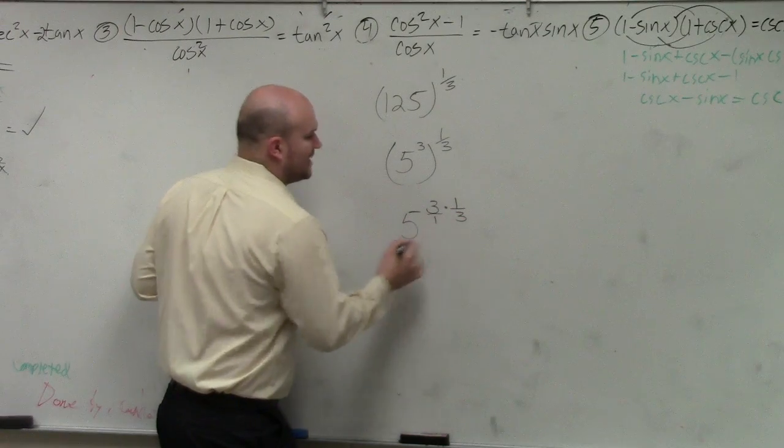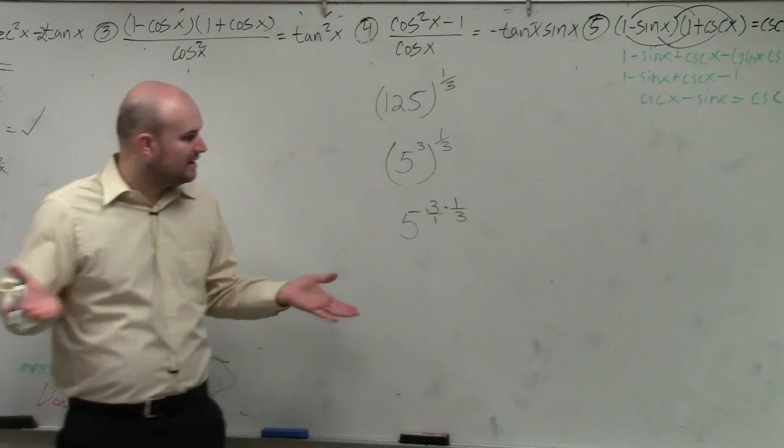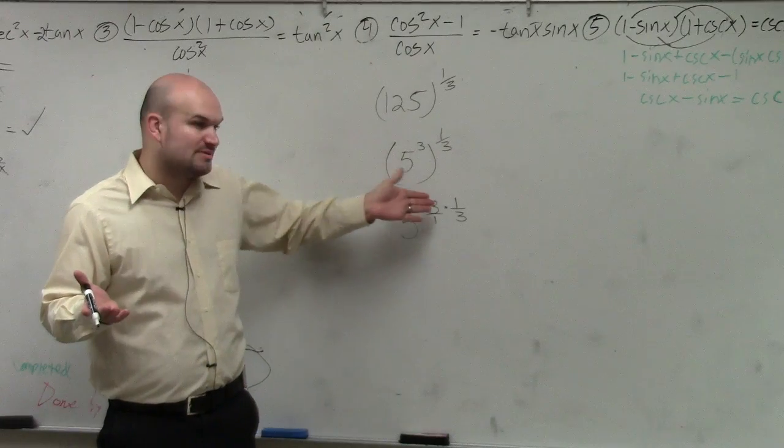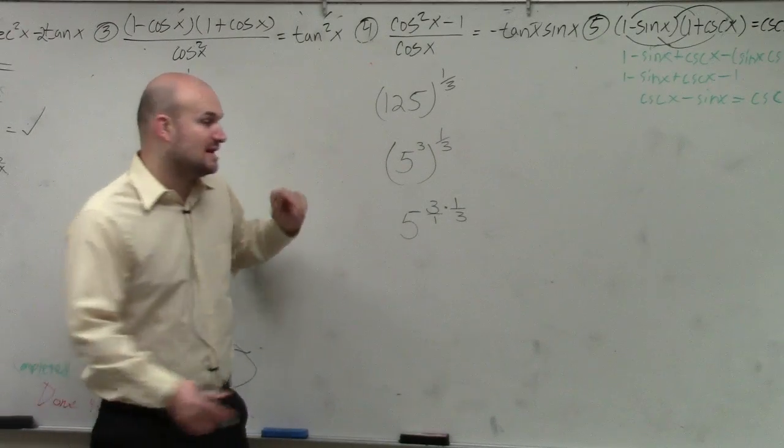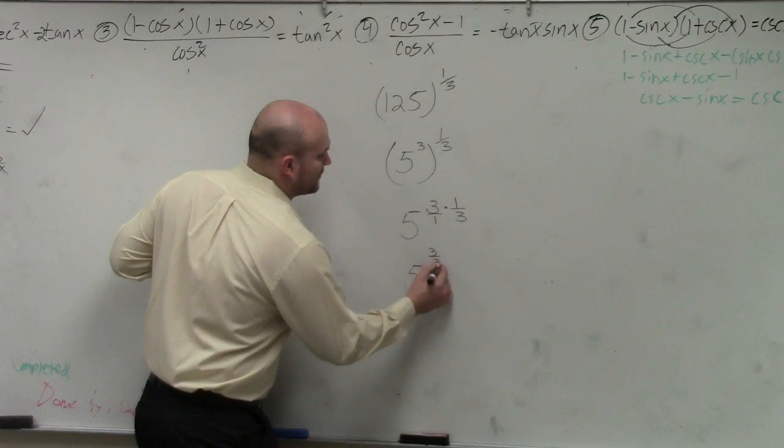A lot of times, it might be helpful to put that over 1. So how do we multiply a whole number times fraction? You multiply numerator times numerator, denominator times denominator, which is 5 to the 3 over 3,